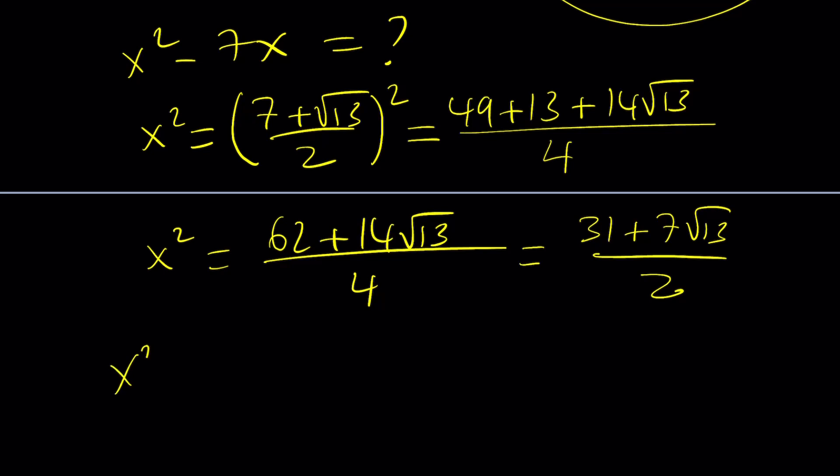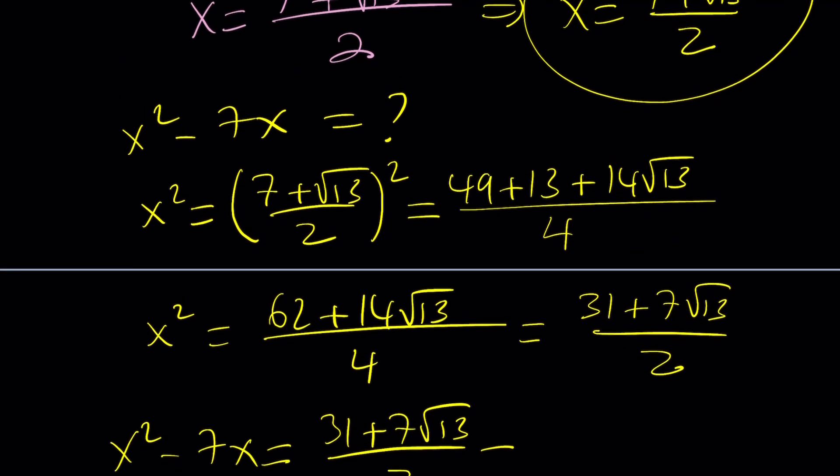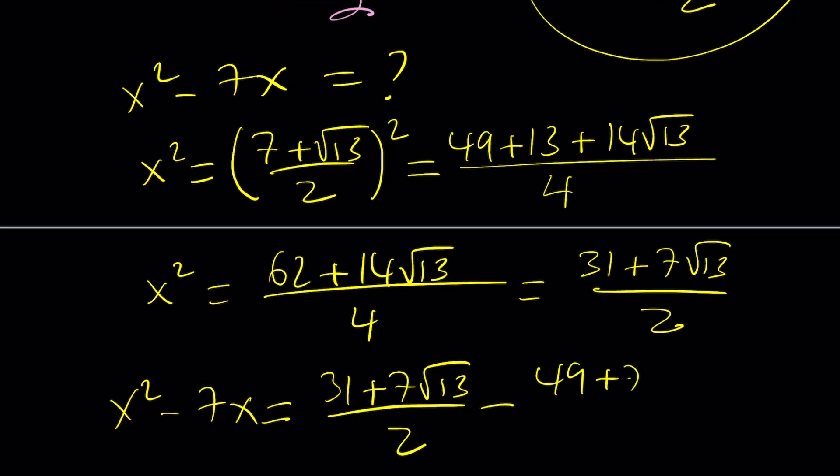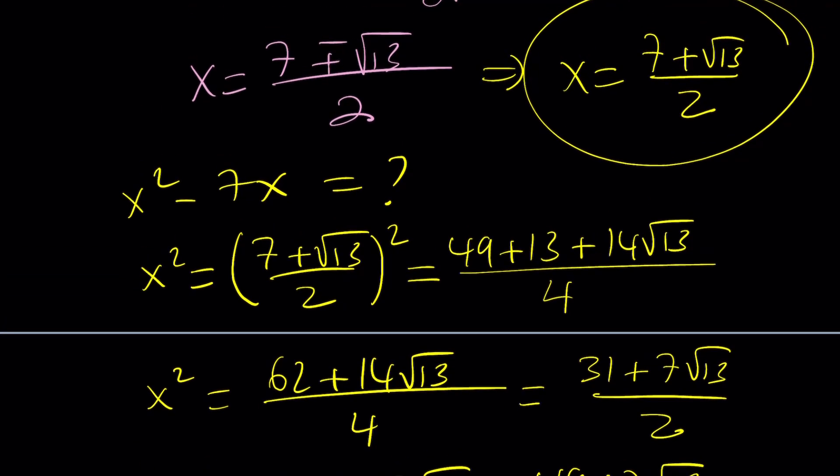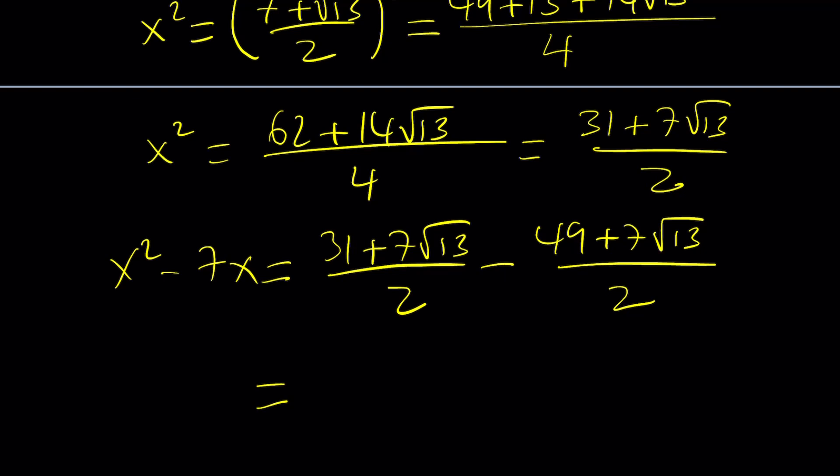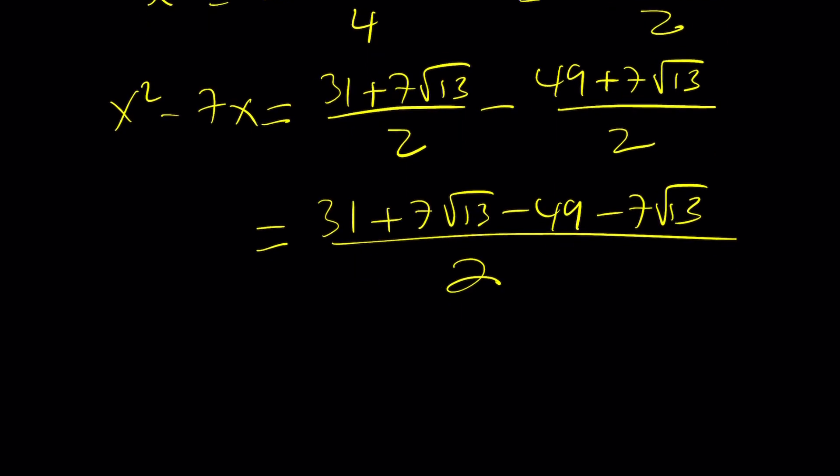Now we're going to do x² minus 7x. That's going to give me 31 plus 7 root 13 over 2 minus 7 times x, which is 49 plus 7 root 13 over 2. I just multiply the numerator by 7. Since they have the same denominator, I can just subtract directly. 31 plus 7 root 13 minus 49 minus 7 root 13 all over 2. And now 7 root 13 is going to cancel out. 31 minus 49 is negative 18. And negative 18 divided by 2 is just negative 9. So the answer will be negative 9.